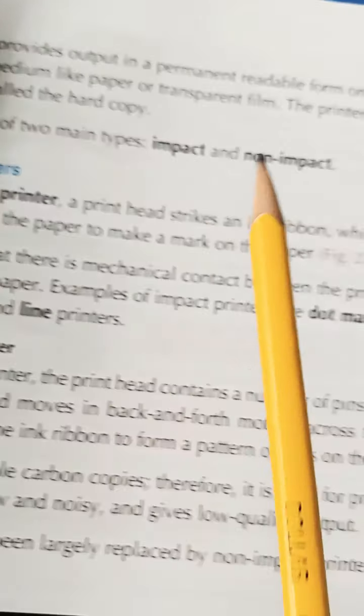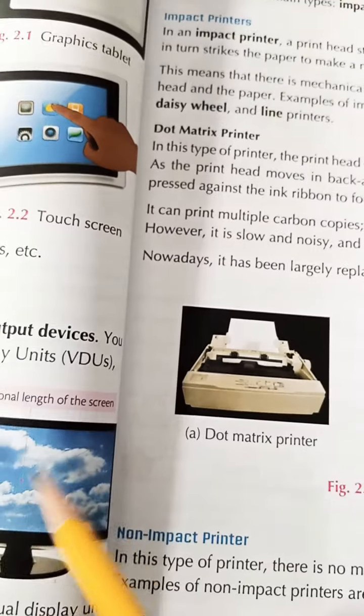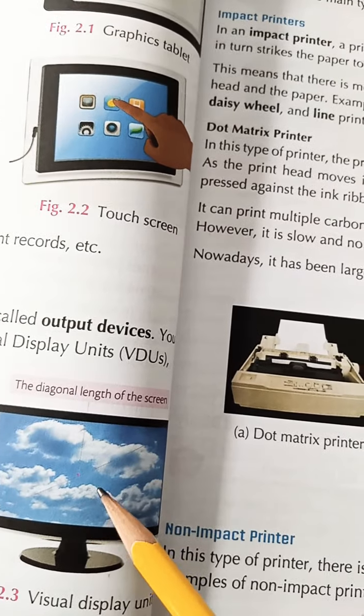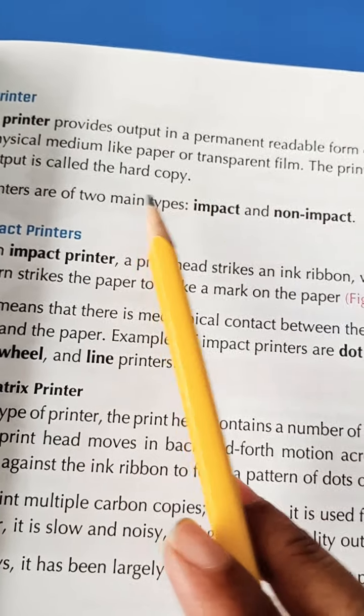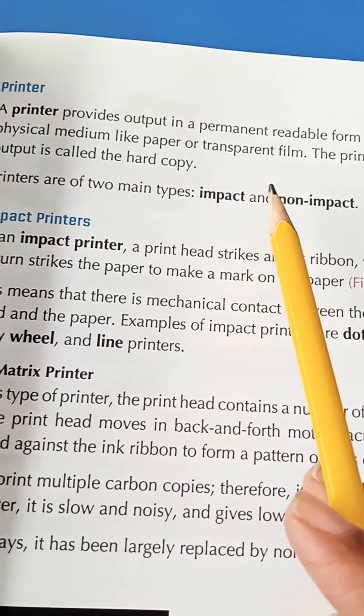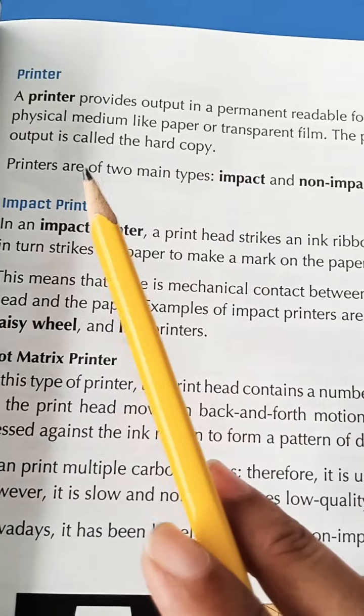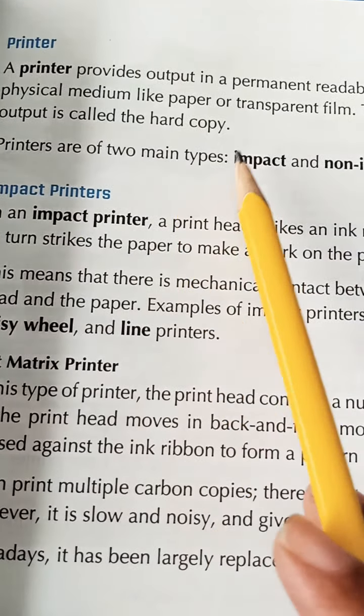Printer. Printer kya hota hai beta? Jo cheez humne soft copy mein dekhi, like a picture ya uske upar likha hua text, usko readable cheez per le aata hai, like paper pe le aata hai, transparent film pe le aata hai, jo aapne haath mein dekh sakte. Printer wo kaam karta hai and what copy kya kehlati hai? Hard copy. Jo video mein hum dekh rahe hote hain, it is called the soft copy.